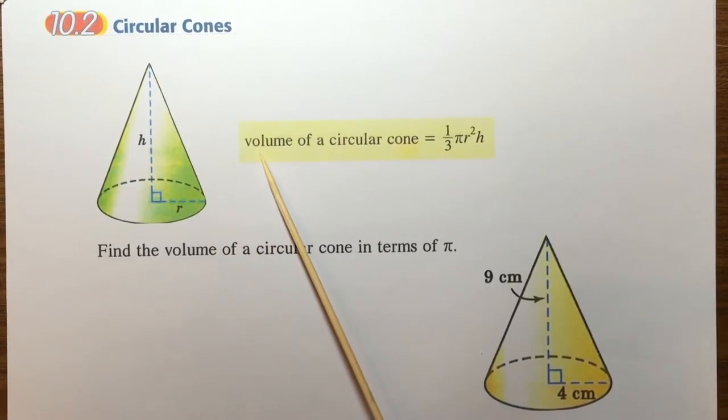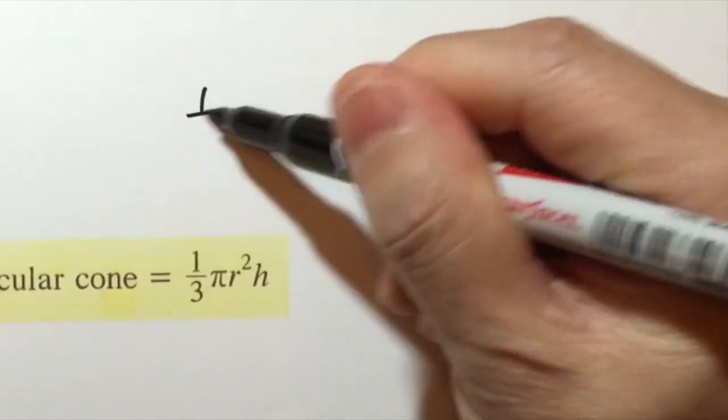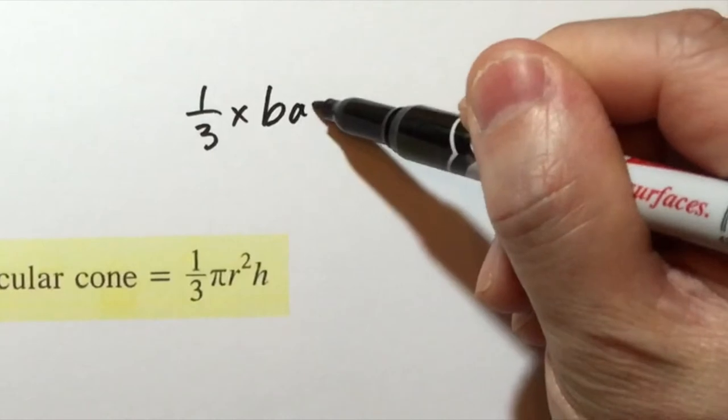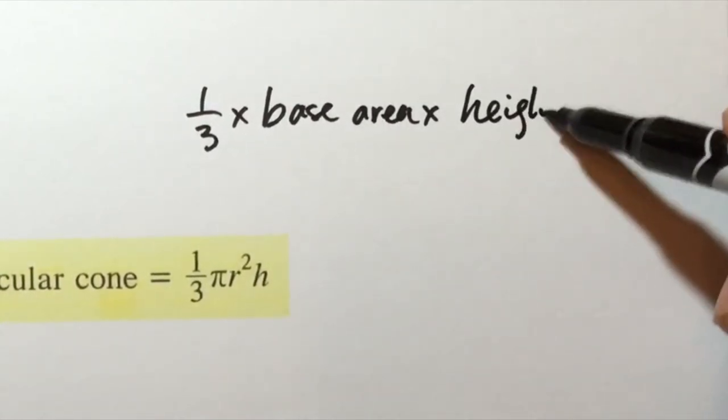Circular cone. The first formula we have to know is to find the volume of a circular cone. It is given by one third times the base area times height.